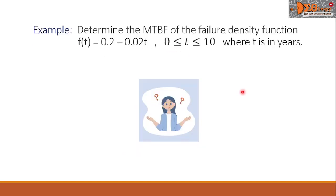Let us see this example. Determine the MTBF of the failure density function f(t) equals 0.2 minus 0.02t, where 0 ≤ t ≤ 10, where t is in years.